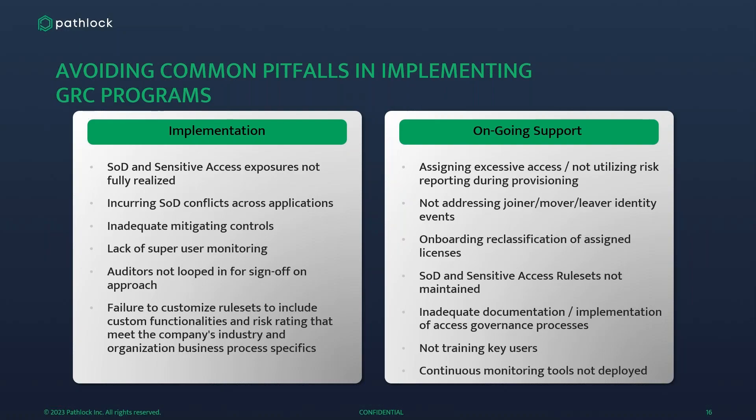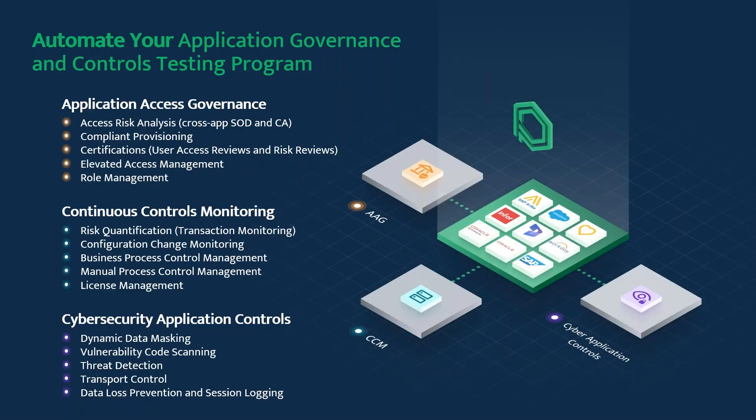Continuous monitoring, once achieved, will save time, cost, and gain efficiencies. PathLock's offerings include application access governance, access controls, risk analysis, compliant provisioning, certifications, elevated access management, role management, and continuous controls monitoring — including risk quantification, configuration change monitoring, process controls, license management, and cybersecurity application controls such as vulnerability code scanning, transport controls, and data loss prevention.